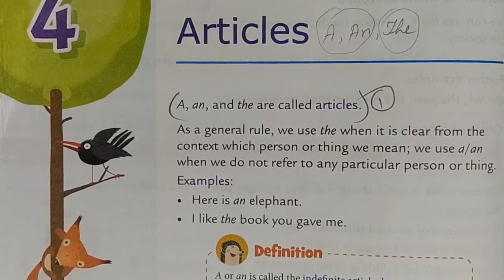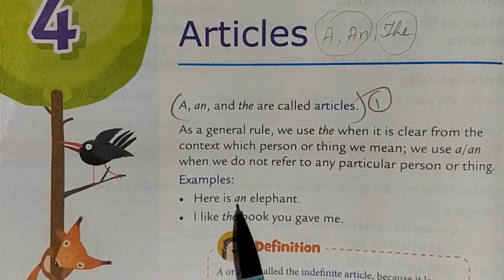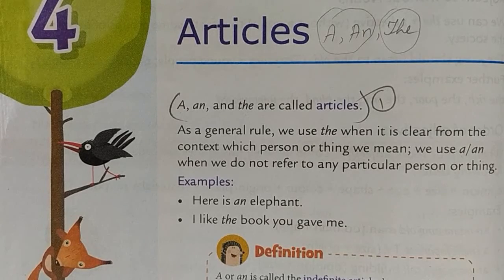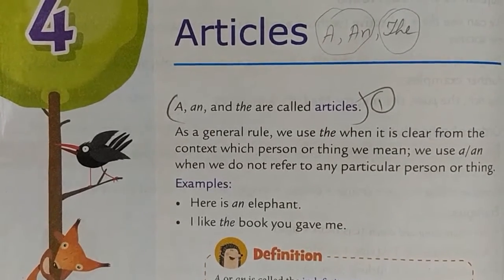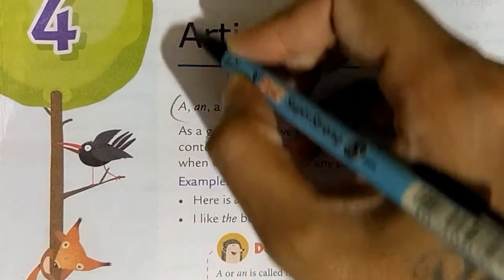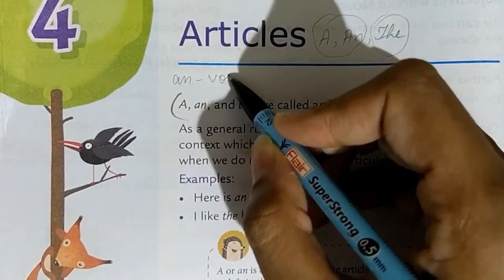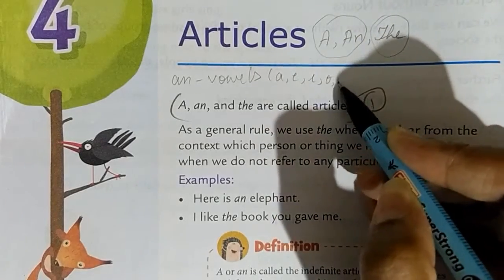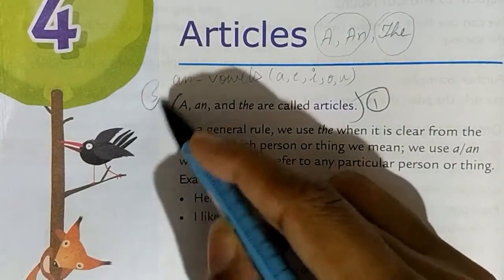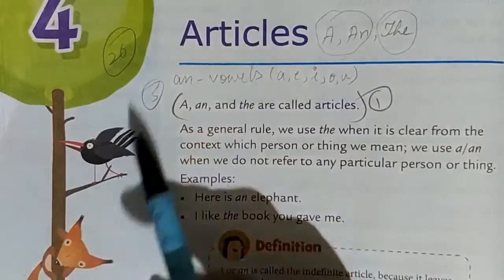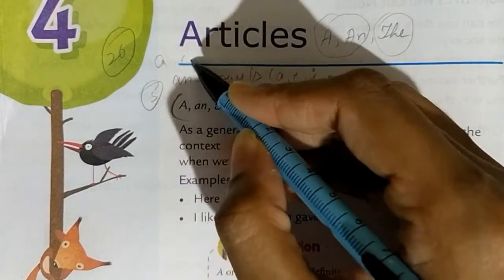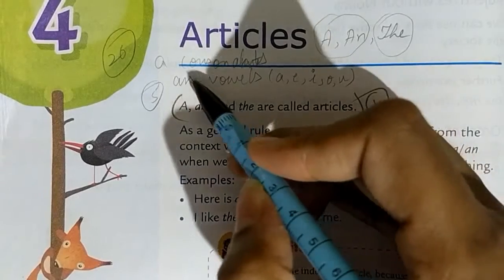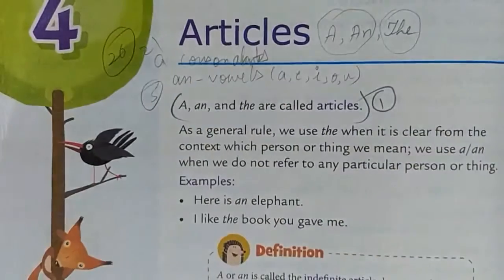Here is an example: 'an elephant.' One important thing to remember about 'a' and 'an' — we use 'an' before vowels. The vowels are A, E, I, O, U — there are five vowels. There are 26 alphabets in English and five vowels. We use 'a' before consonants, and there are 21 consonants.